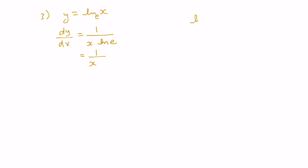Remember, ln e has base e and we want to know that value. If we call it y, then using our properties e to the y equals e, which can also be written as e to the 1. Therefore y equals 1, so ln e equals 1.